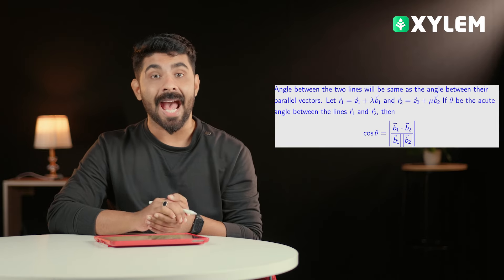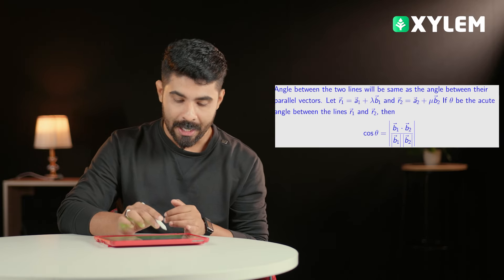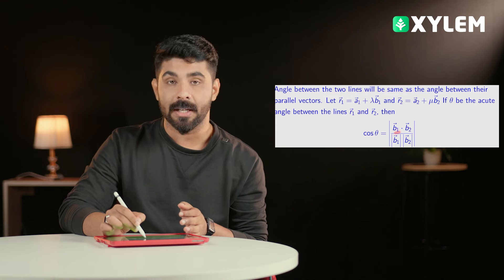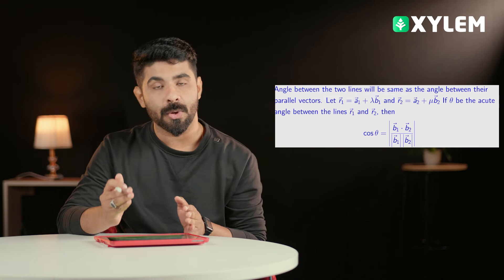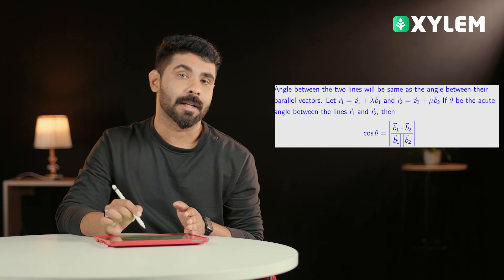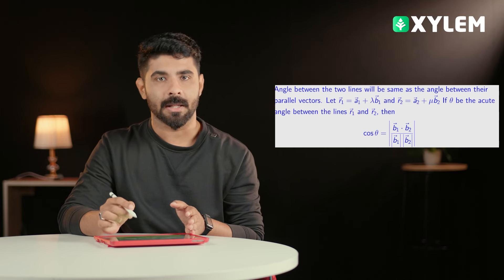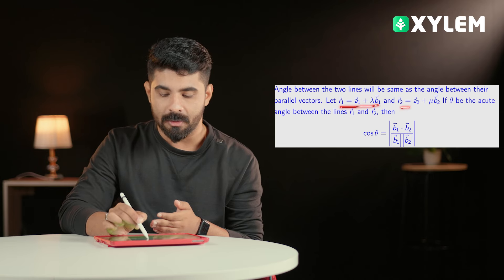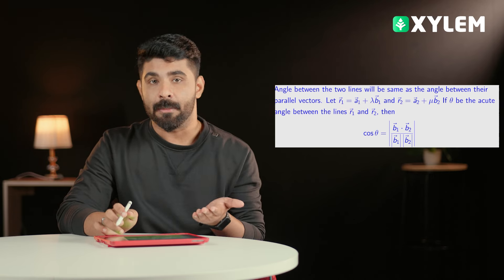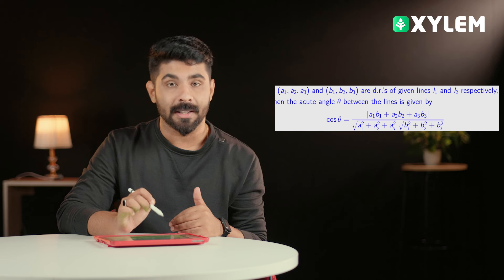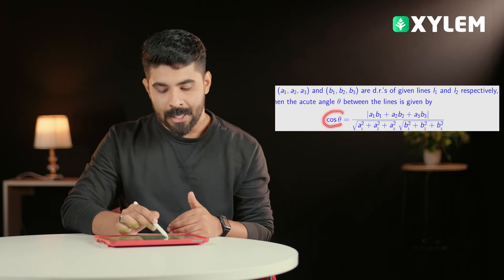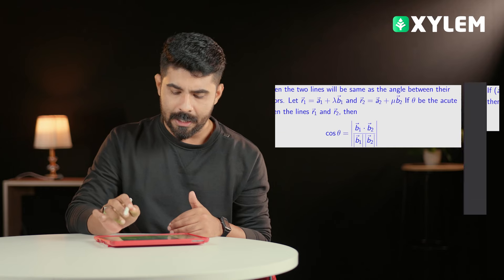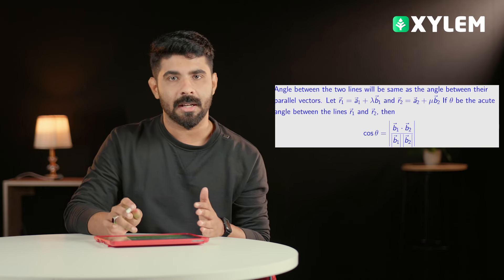Now the angle between two lines. We have to write: cos theta equals Vector b1 dot Vector b2 divided by the magnitude of Vector b1 times the magnitude of Vector b2. We need to take the modulus (positive value). The same cost theta formula applies for the Cartesian form of angle between two lines.